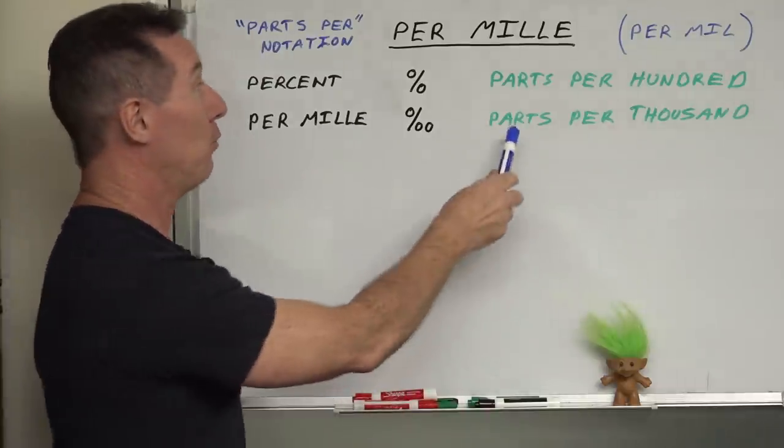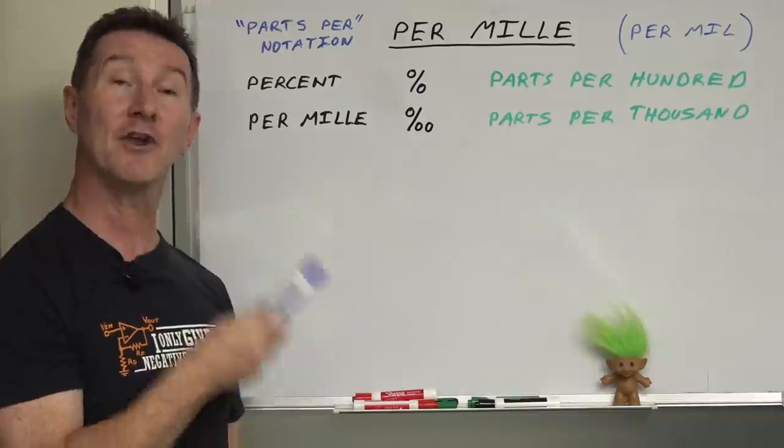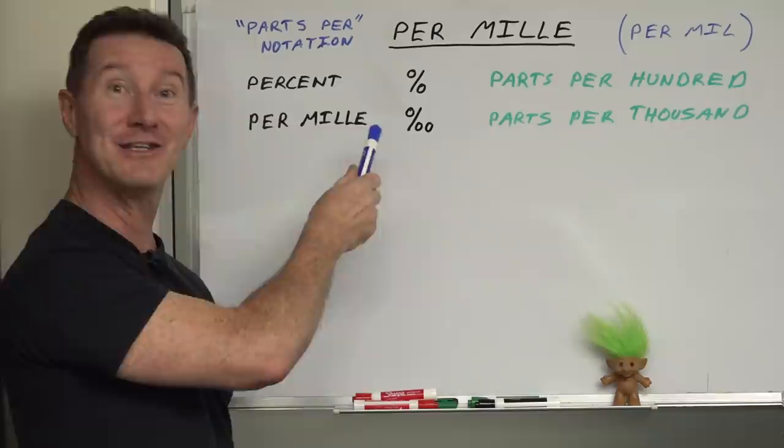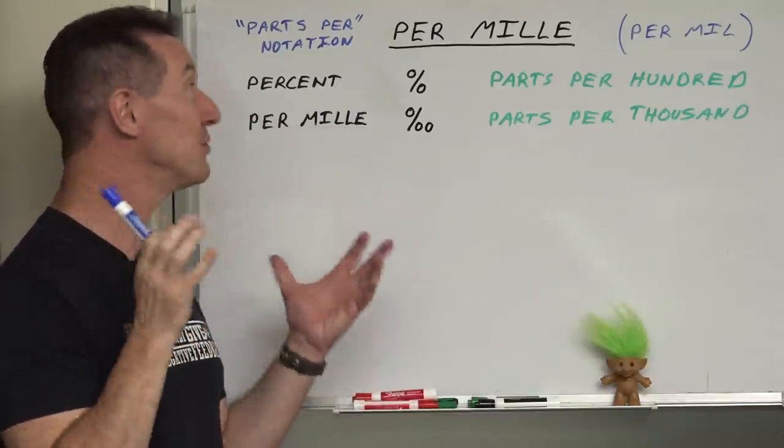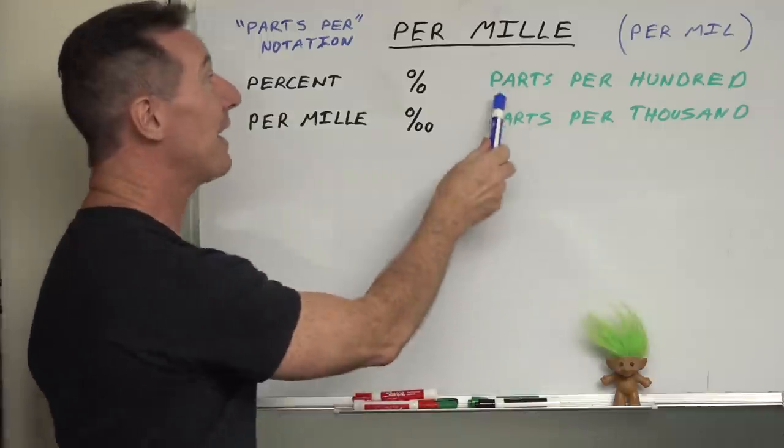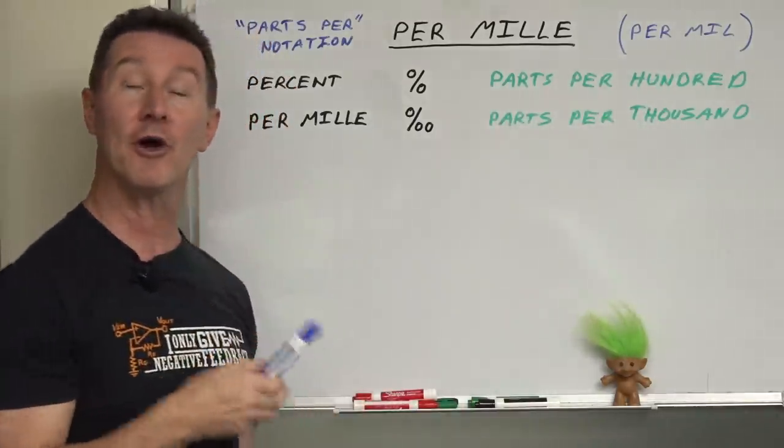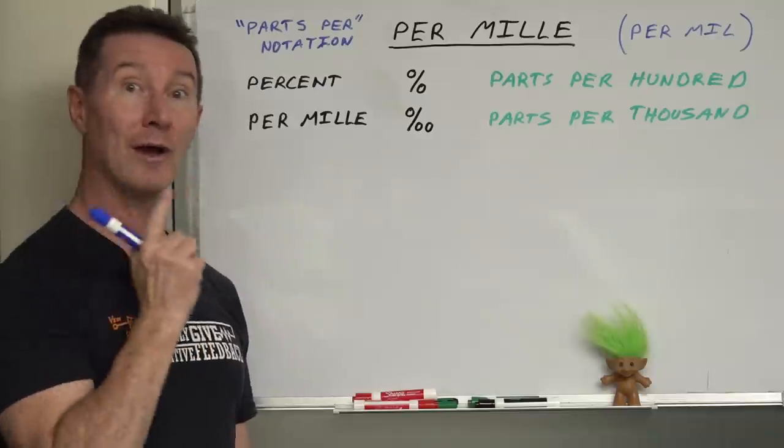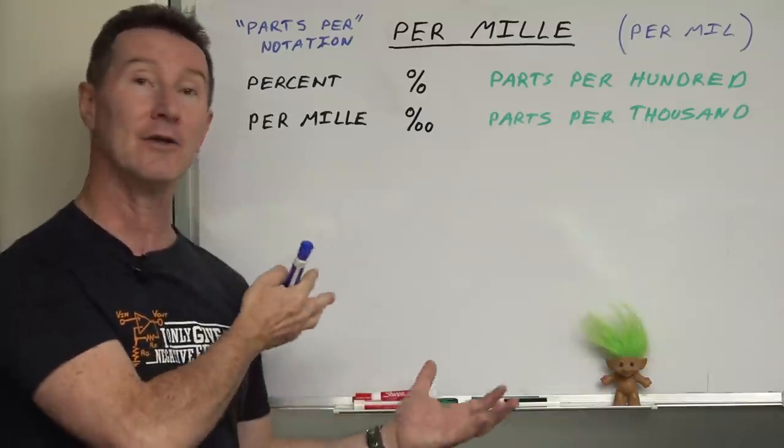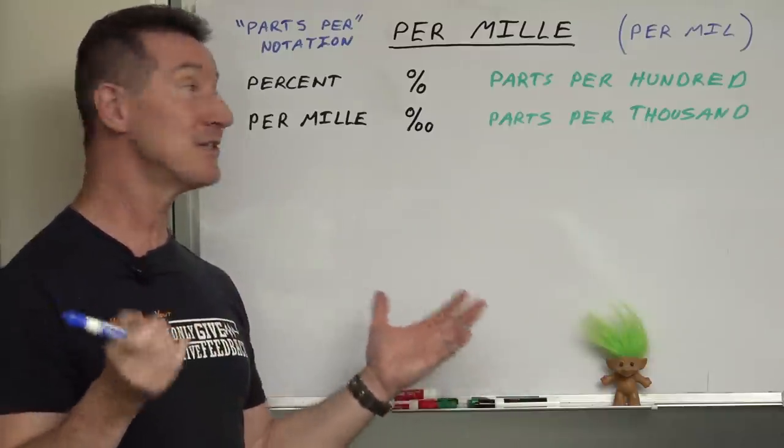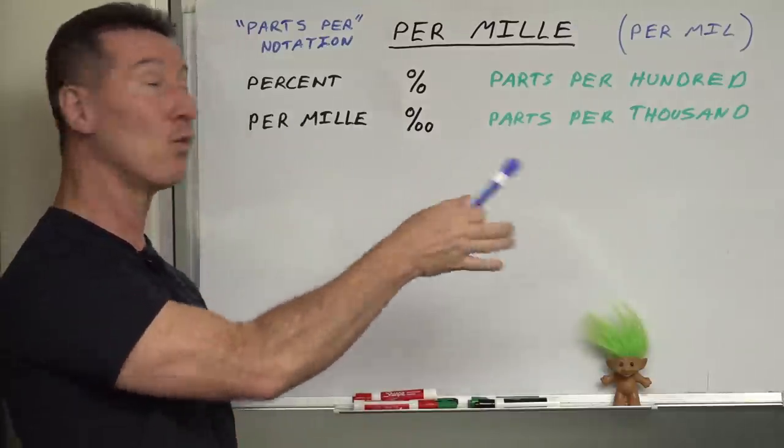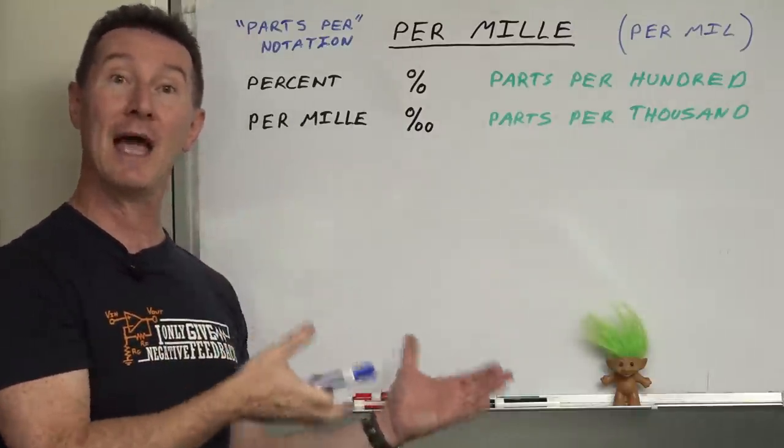And per mil is what's called parts per thousand, i.e. one part in a thousand. Now, you've certainly heard of the percentage sign. You're familiar with this. You use it every day in general life and engineering as well. That's actually parts per hundred, i.e. one part in a hundred. One percent is one one-hundredth of whatever thing that you're talking about. And per mil is no different. It's just parts per thousand. One part in one thousand of whatever you happen to be talking about.